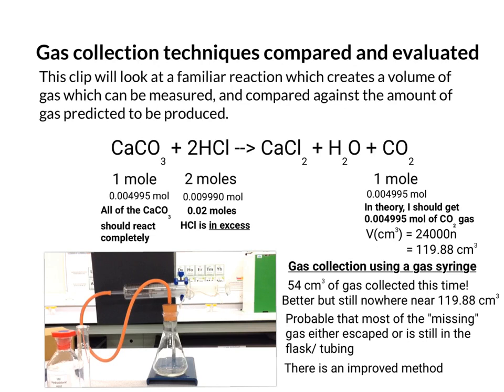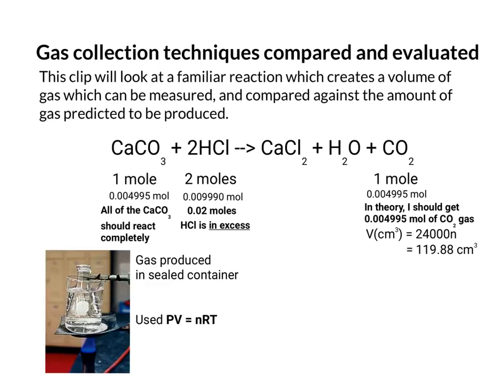So there is actually a method that's an improvement on this one. So if your gas is produced in a sealed container and you know the temperature and you can use atmospheric pressure you can use another technique called PV equals nRT. This is the ideal gas equation which I've covered in a separate clip.